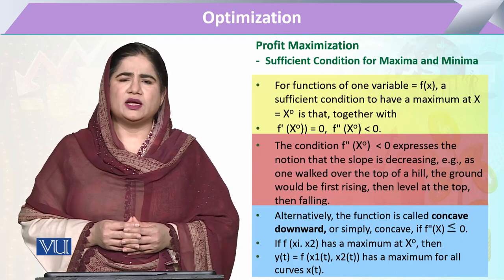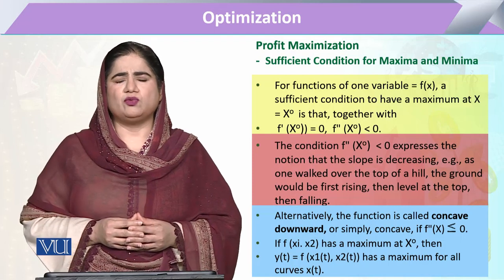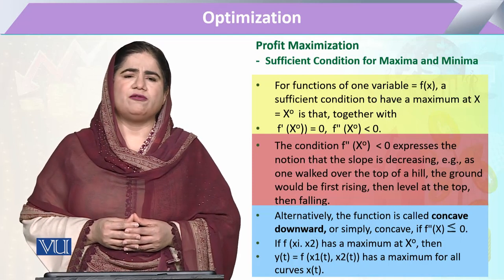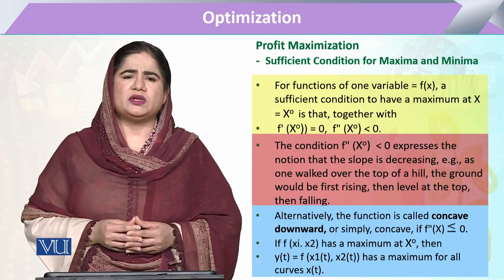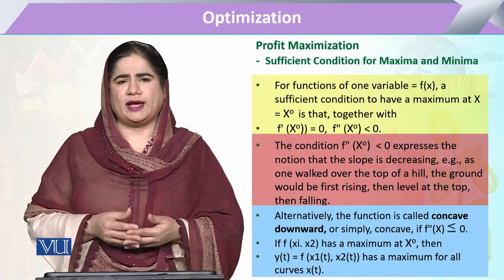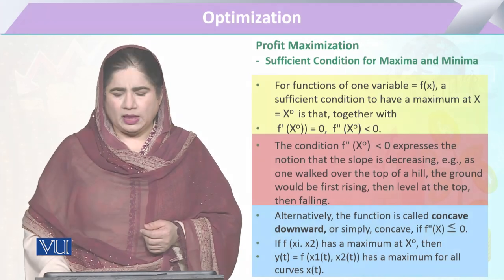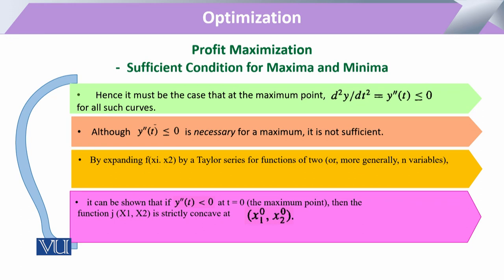Expanding this case from the single-variable to the two-variable case: if the function has two variables, meaning y is a function of x1 and x2, then we work this out individually for x1 and then for x2 — that is, the change in y with respect to x1 and the change in y with respect to x2. Through the second derivative, we ascertain that if the second derivative is less than 0 for both cases, we ensure it was the maximum point.